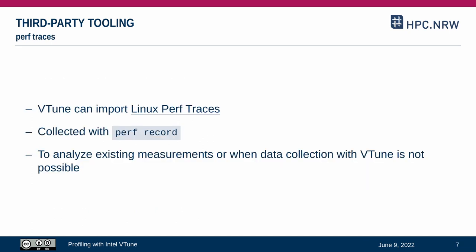vTune can also import Linux perf traces — profiles that have been produced with the Linux perf tool via perf record. With this approach, you can make use of vTune to analyze results that have already been collected, or in cases where data collection with vTune is not possible. The details on how to run this are available in the vTune documentation.